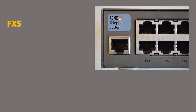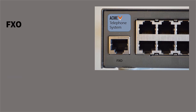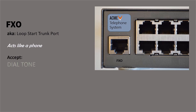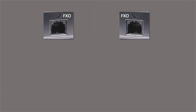A port labeled as FXS is also known as an analog station port. This type of port provides battery feed, ring voltage, and dial tone, and can receive or accept DTMF. A port labeled as FXO is also known as a loop start trunk port. This type of port acts like a phone — it accepts dial tone and ring voltage, and provides DTMF. Let's take a look at some reasons why plugging into the correct type of telephone port on your phone system is crucial.